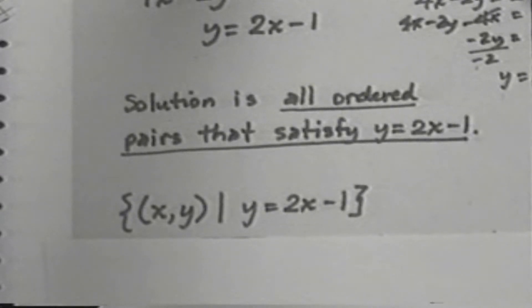The symbolism I have here begins with a brace, then the ordered pair x, y in parentheses, then a vertical bar, and then the equation y equals 2x minus 1, and then the closing brace.